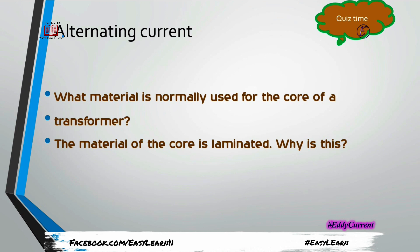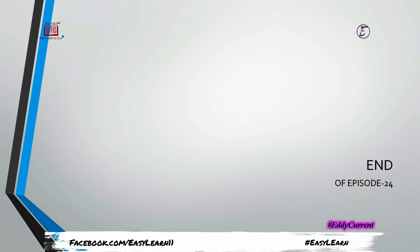For today's task: first, what material is normally used for the core of a transformer? Second, which insulating material is used between the wafers of the laminated ferromagnetic core in a transformer? Third, why is lamination used in transformer cores? This is enough for today's episode; we will continue in the next episode. Take care, watch, learn, grow — see you in the next episode.